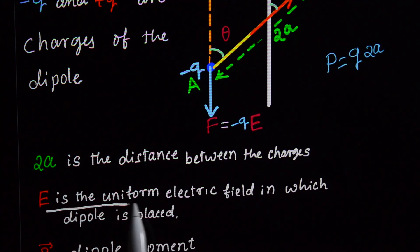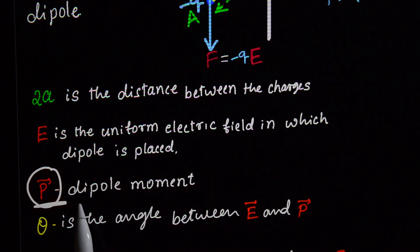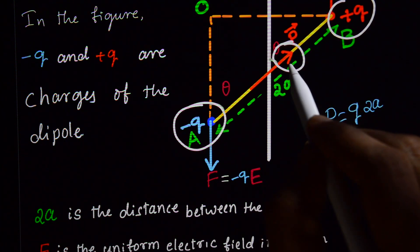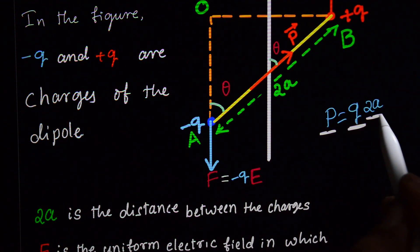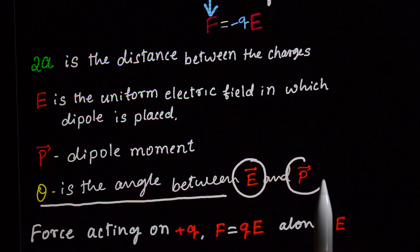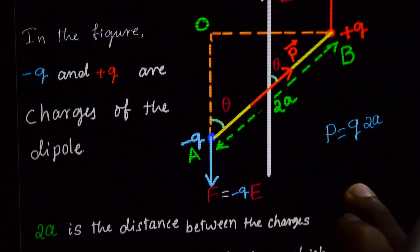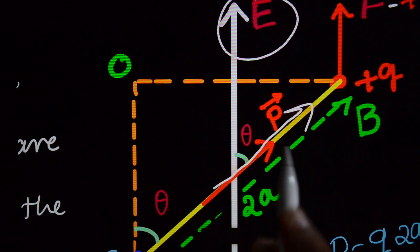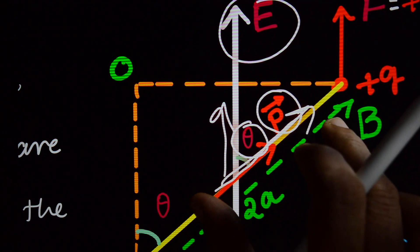In this figure, E is the uniform electric field in which the dipole is placed. The angle between the electric field and the dipole moment is theta. You can see here: this is the dipole moment and this is the electric field E direction, and theta is the angle between them.